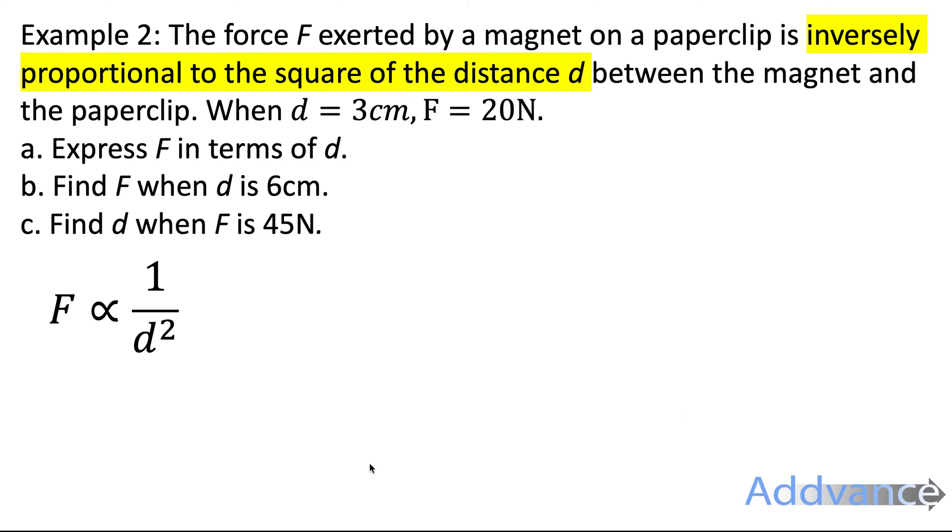So F is inversely proportional to the square of the distance. That's what that means. Now, that also means that F is equal to k divided by d squared, where k is some number we're going to find.